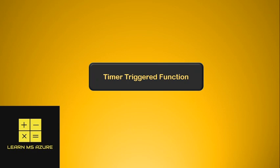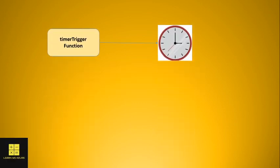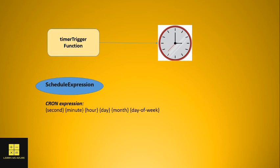A timer triggered function is a type of Azure Function which gets executed on a particular time interval. You can specify when the Azure Function should be executed. Azure will understand the time to execute a function based on a scheduled expression, also known as the cron expression, which is provided in a specific format. There are six things you need to provide: second, minute, hour, day, month, and day of the week.